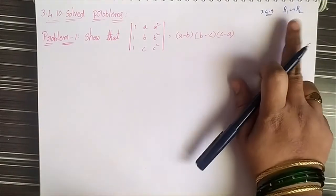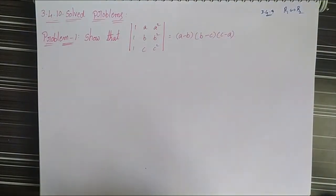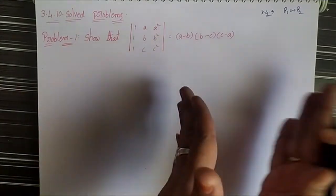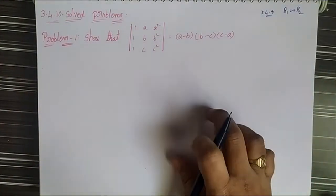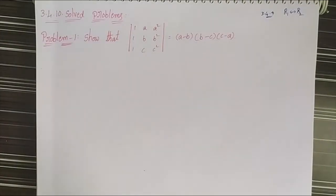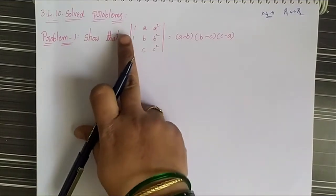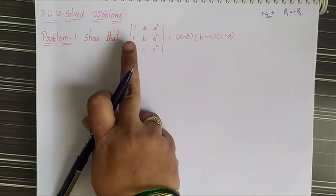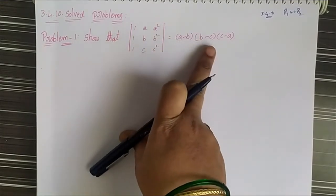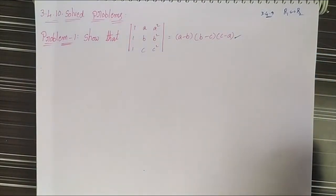By using all these notations and operations, we have to solve the next problems. The first problem is: show that the determinant of the matrix with rows (1, a, a²), (1, b, b²), (1, c, c²) is equal to (a minus b) into (b minus c) into (c minus a). This is our given problem.